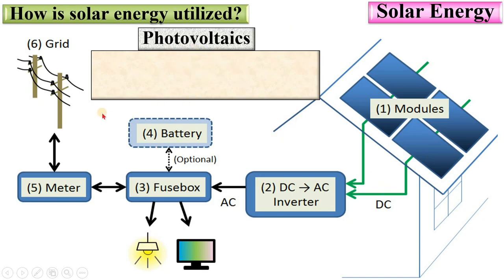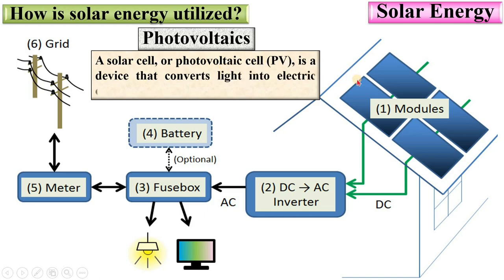The main important principle of solar energy utilization for generating electricity is photovoltaics. A solar cell, or photovoltaic cell, sometimes known as PV, is a device that converts light into electric current using the photovoltaic effect. This is the principle. Here you can see the solar modules which create DC current. This is the inverter used to convert DC into AC. Now it is AC power, and with the help of AC power, you can run different home appliances.